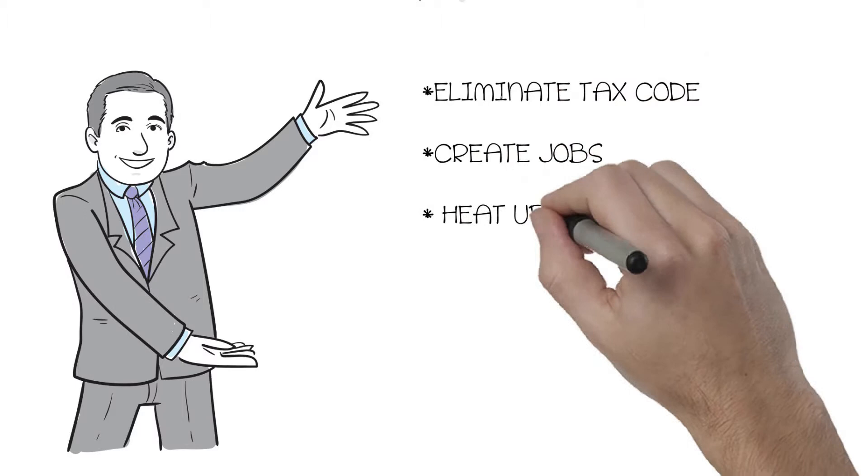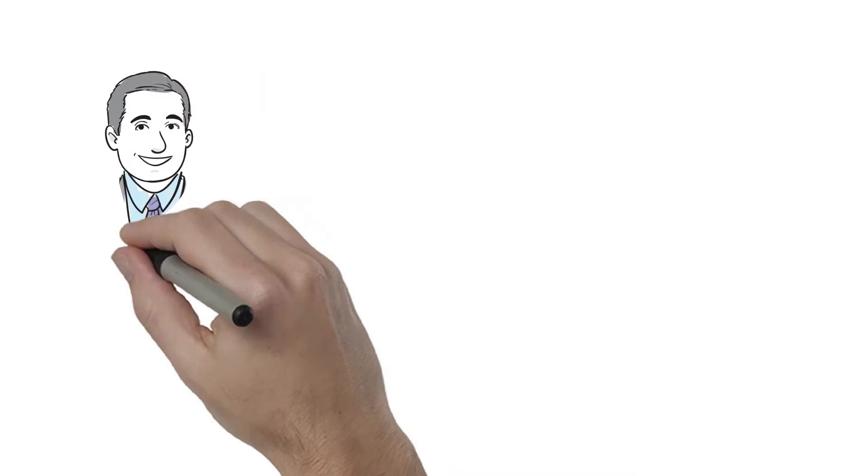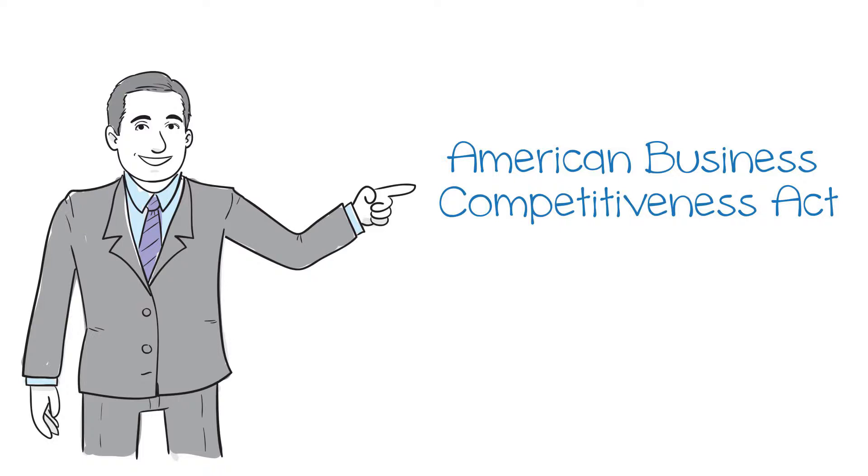By eliminating the existing tax code for business, it will create jobs, heat up the U.S. economy, and bring American cash home from overseas. The plan is called the American Business Competitiveness Act, or the ABC Act for short.